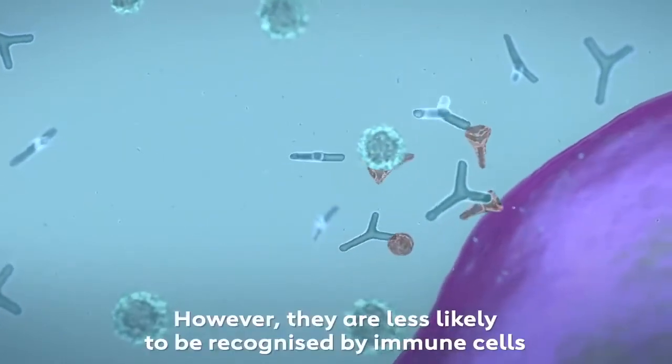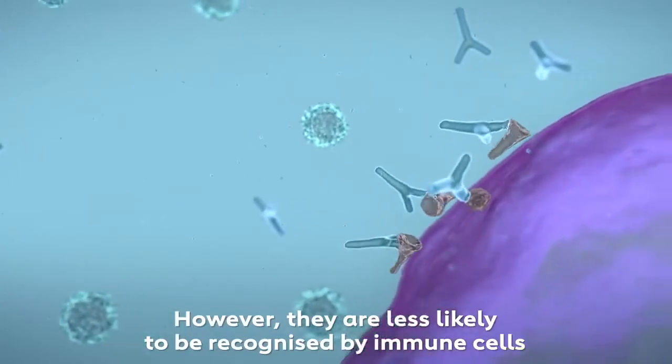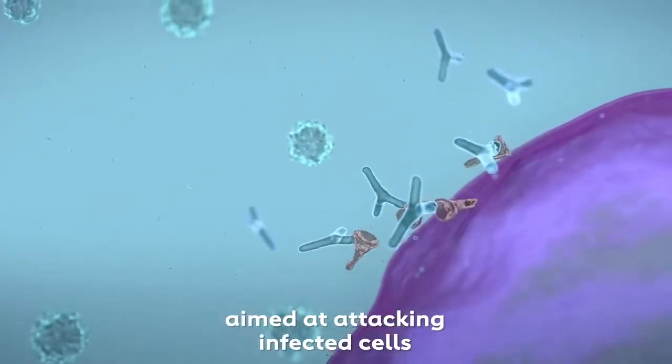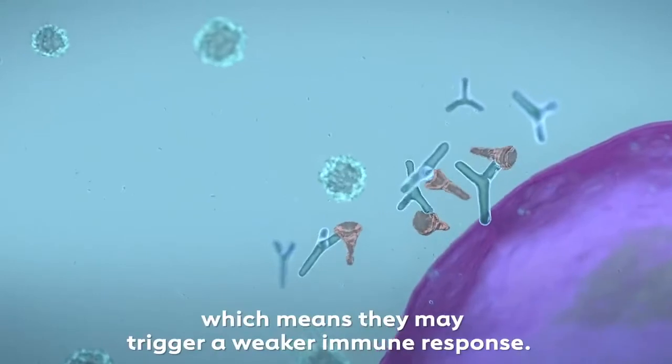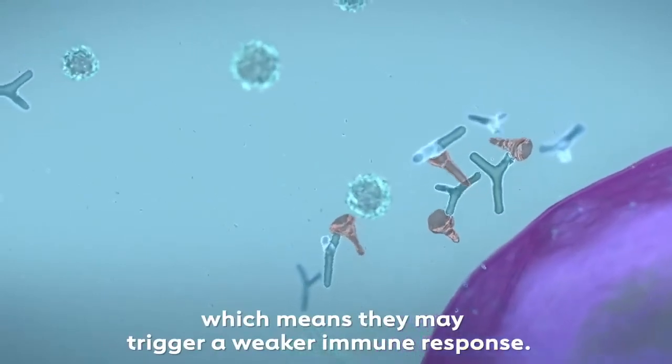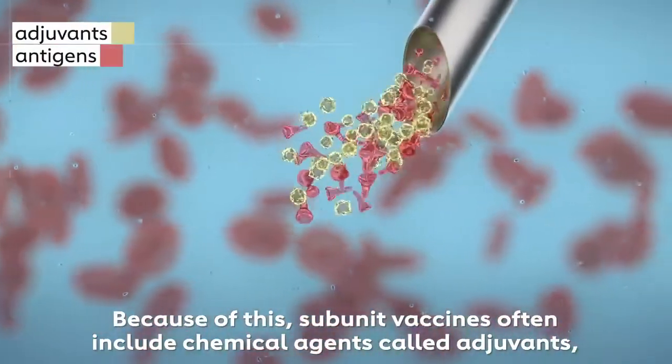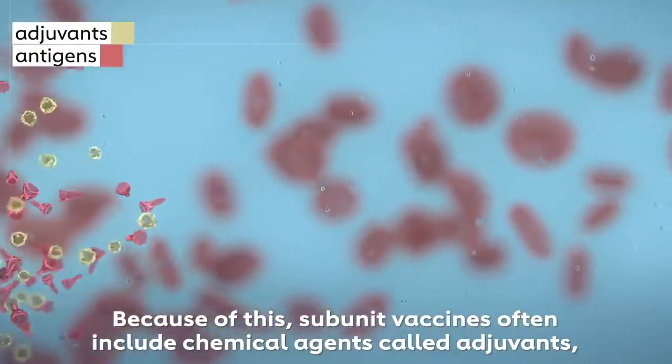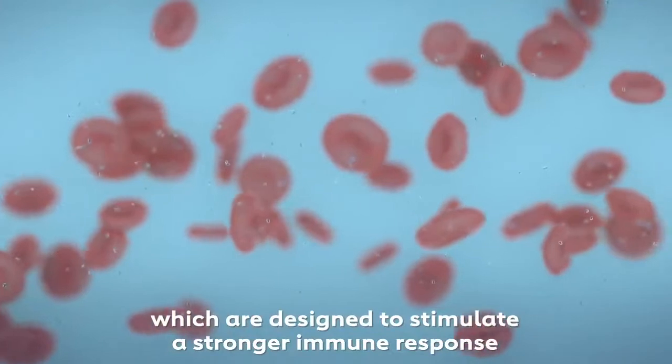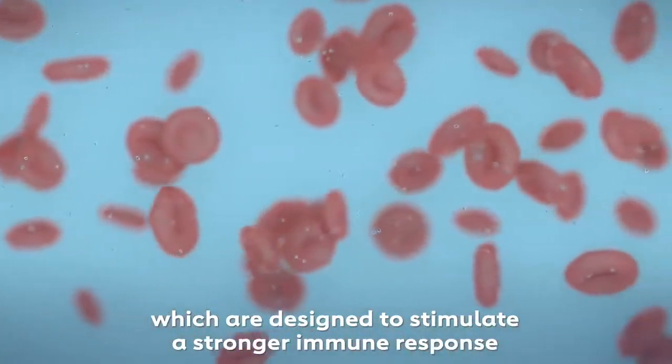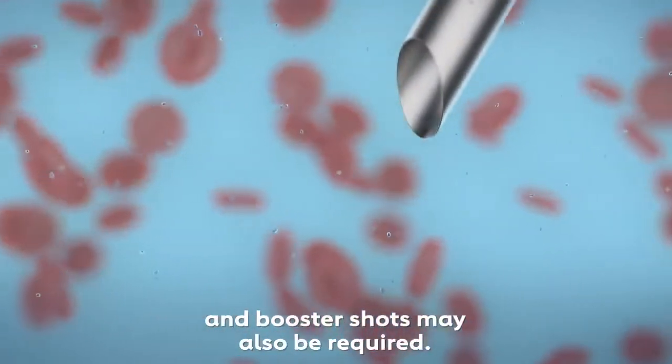However, they are less likely to be recognised by immune cells aimed at attacking infected cells, which means they may trigger a weaker immune response. Because of this, subunit vaccines often include chemical agents called adjuvants, which are designed to stimulate a stronger immune response. And booster shots may also be required.